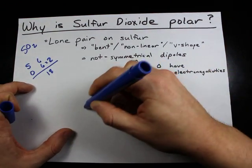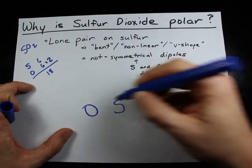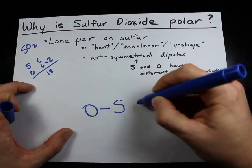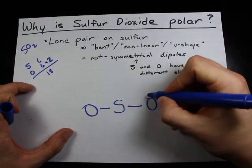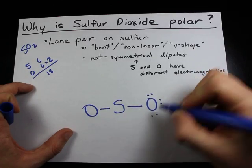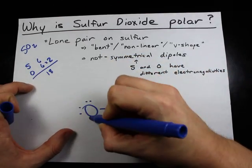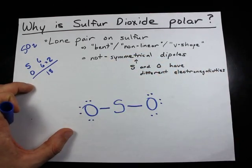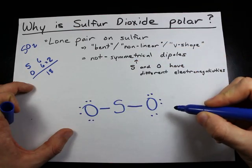Sulfur will be in the center, oxygens on the outside. I always do my single bonds first, then I fill the octet on my outer atoms. That's 16 electrons total.